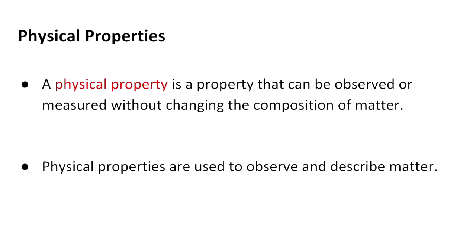Physical properties are properties that can be observed and/or measured without really changing the composition of matter. If we know what the chemical formula of something is, that formula will stay consistent with that physical property. Physical properties are used to observe and describe matter.